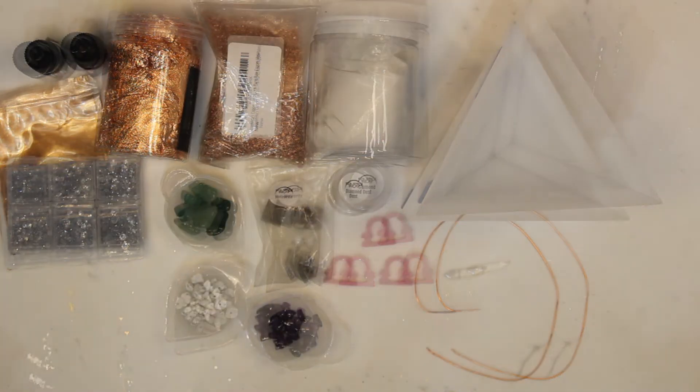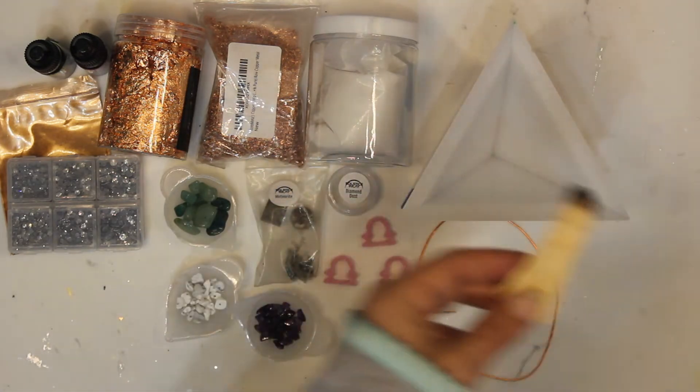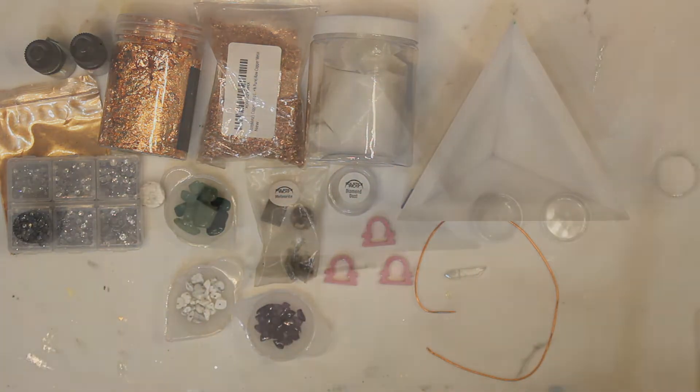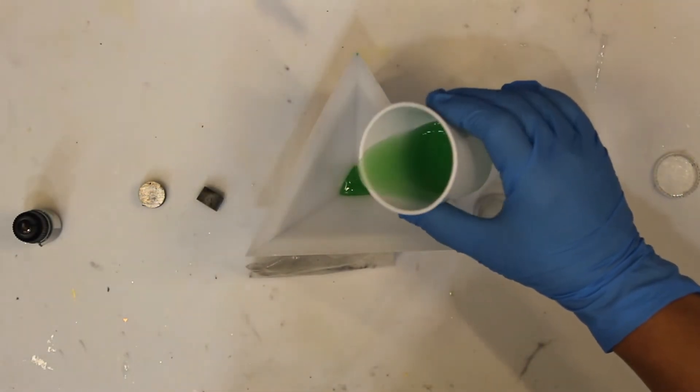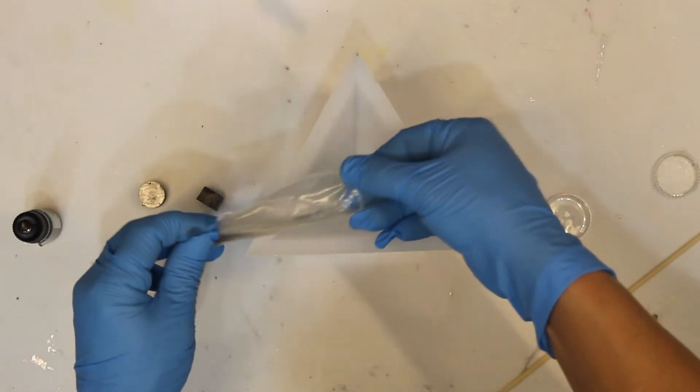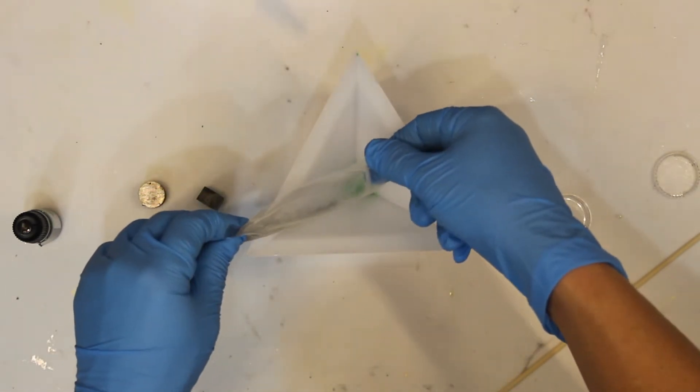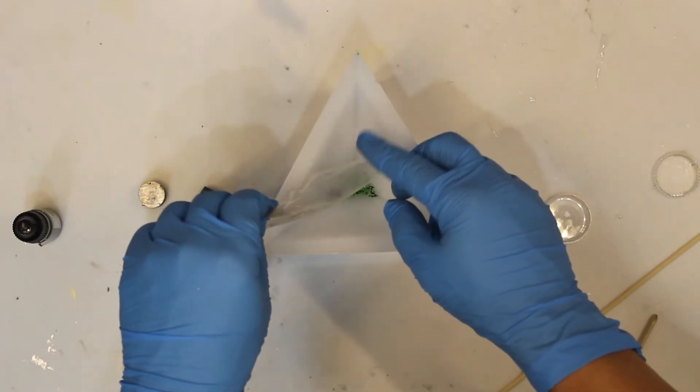I recommend smudging your space and materials with sage and palo santo. I will begin this project by pouring green tinted resin into the apex, then I will add to this resin meteorite shavings and diamond dust.